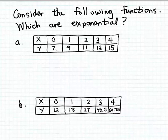Notice that the outputs are also changing by a steady amount. Each time the input increases by one, the output increases by two. As x goes from zero to one, the output increases by two from seven to nine. When x goes from one to two, the output again changes by two from nine to 11, and so on.